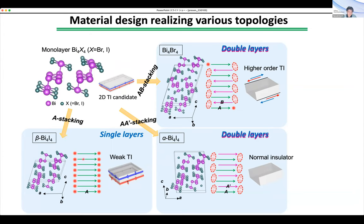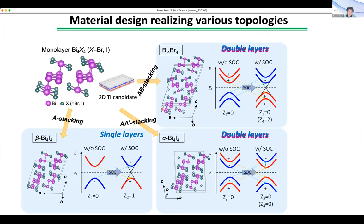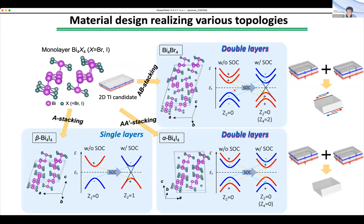Bismuth bromide has AB stacking where each layer flips by 180 degrees, so even with double layers, these two are different. We found different topological phases: for example, bismuth beta phase is weak TI, and double-layer bismuth iodide is a normal insulator, while bromide with double layer gives higher-order TI. In the band picture, the beta phase material has only single band inversion generating a topological surface — weak TI. In the alpha phase, there are barrier splittings, but because each double split band has different plus and minus phase, this becomes a normal insulator after embedding all bands. But in bromide, even with double inversion, this generates the higher-order state with hinged spin metallic current.